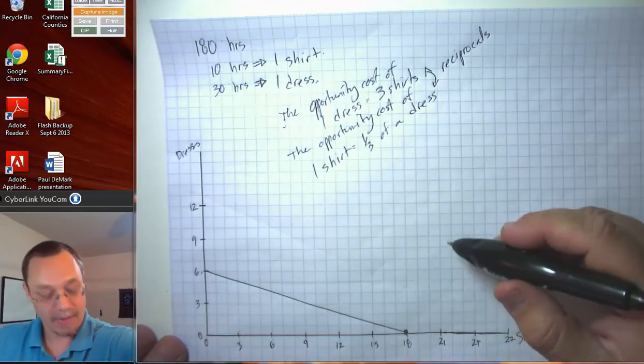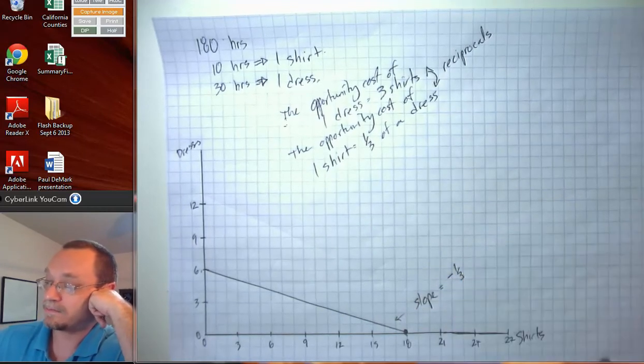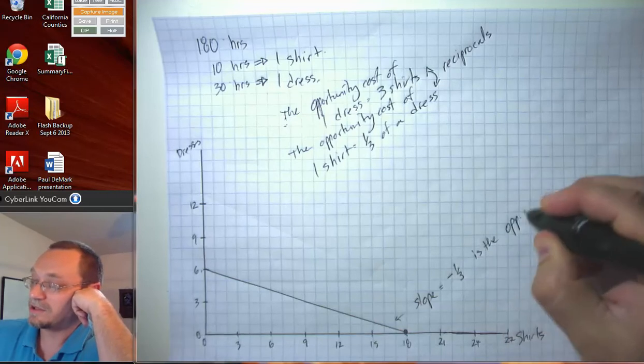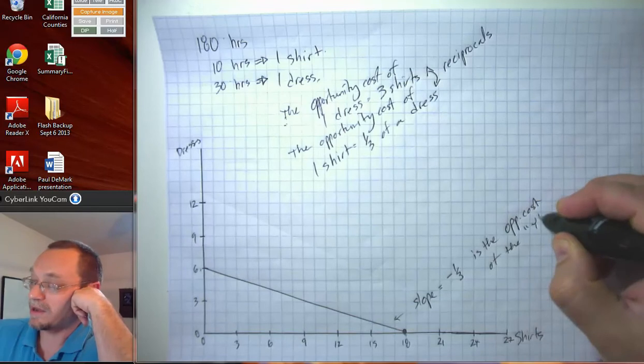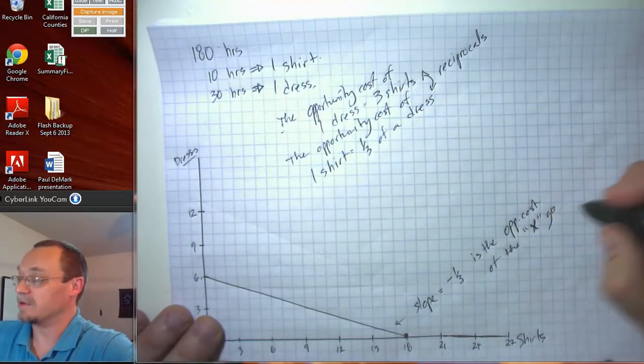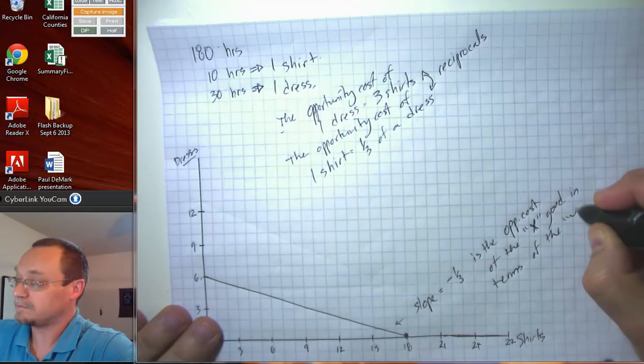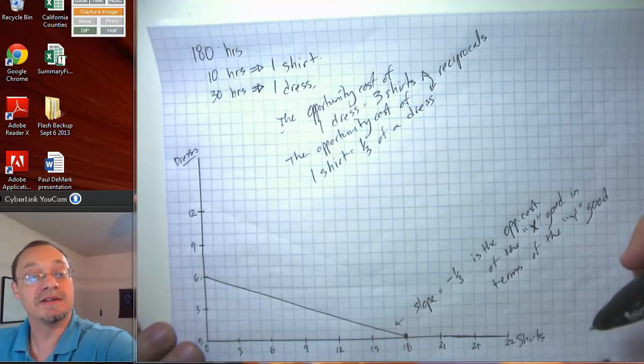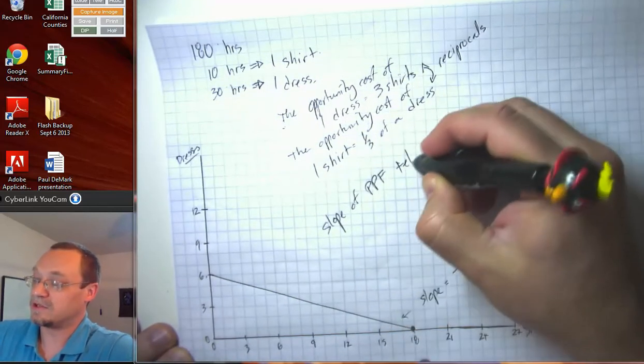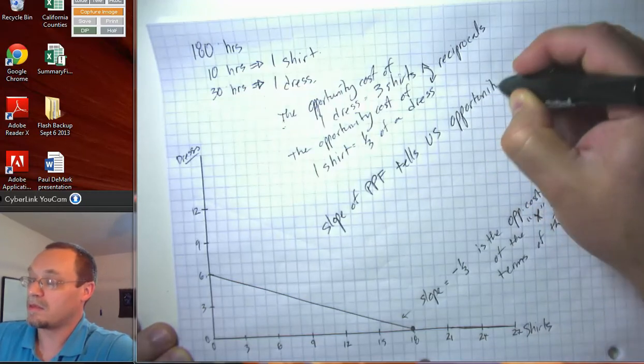If we look at the PPF, what we're going to notice here is that this thing has slope negative one-third. And so the slope of the PPF is the opportunity cost of the y-good, so the good on the y-axis. I'm sorry, it's the opportunity cost of the x-good in terms of the y-good. So the slope of the PPF tells us about the opportunity cost of the different goods. Slope of PPF tells us opportunity cost of the goods.